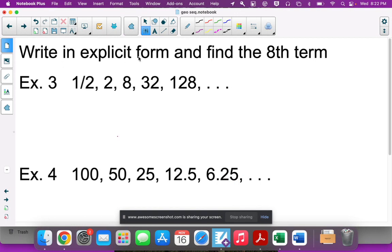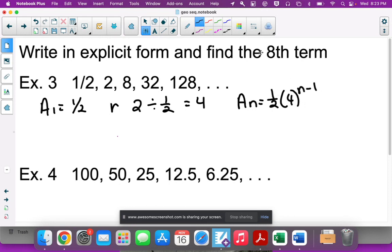Let's try a couple more. Write it in explicit form and find the eighth term. Explicit form means I need my first term, 1/2, and my r value. Second term divided by first term: 2 divided by 1/2 is 4, so my common ratio is 4. Since I want the eighth term, I substitute 8 for n.